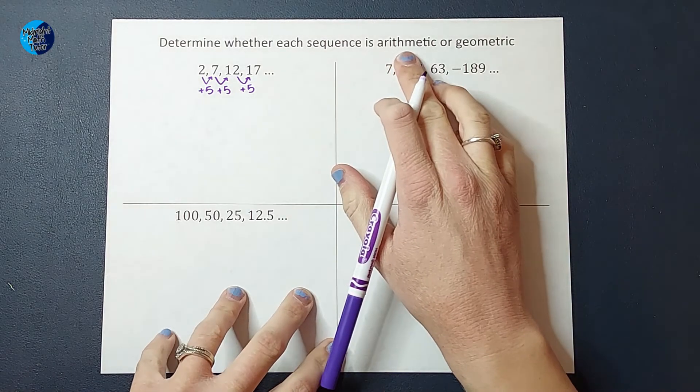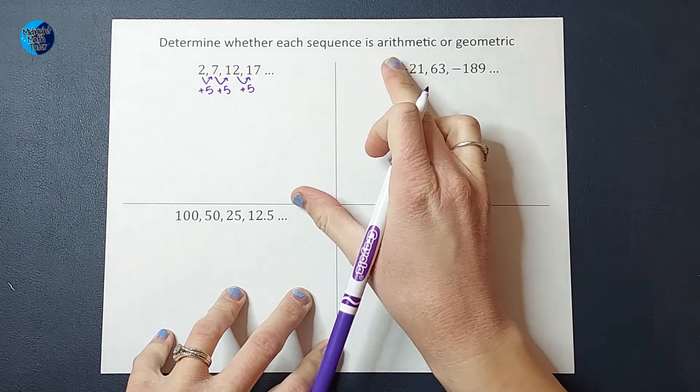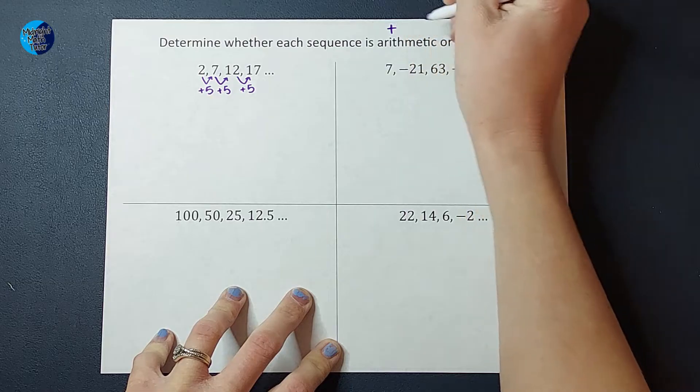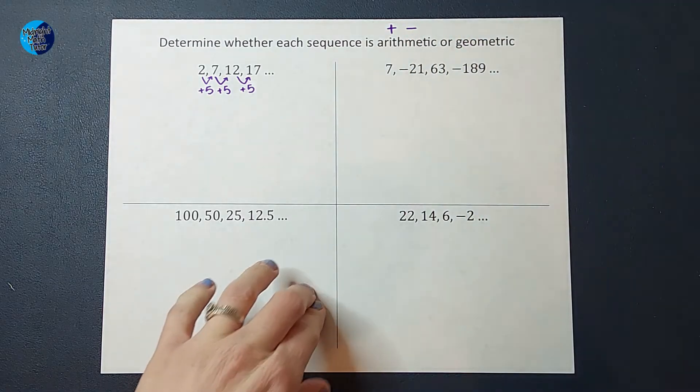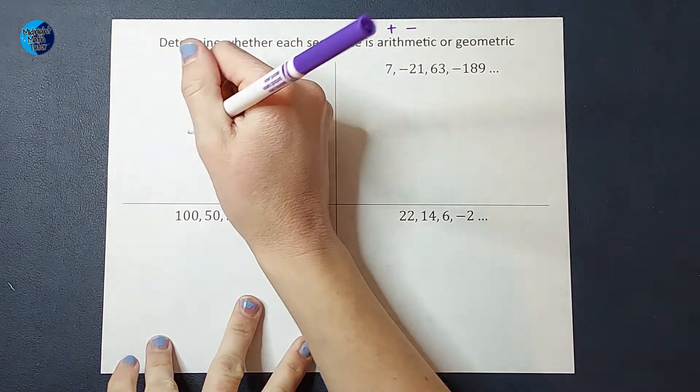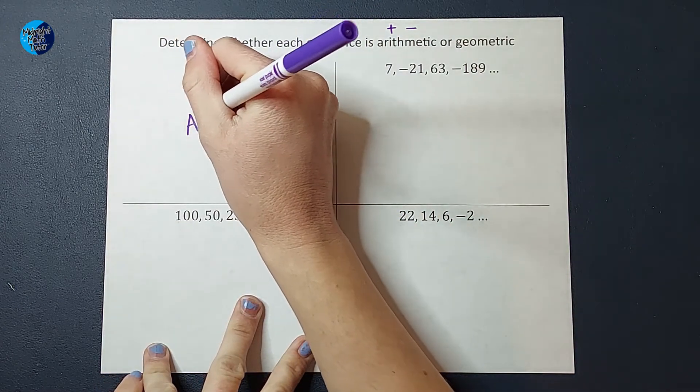But how do I know if it's arithmetic or geometric? Well, an arithmetic sequence means we are adding or subtracting the same number over and over again. So on this one, we were adding five. So this sequence is arithmetic.